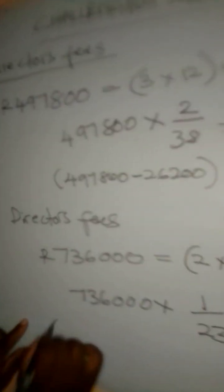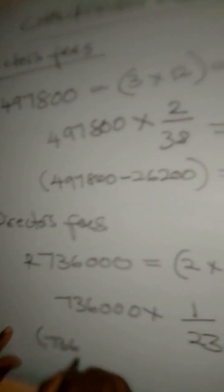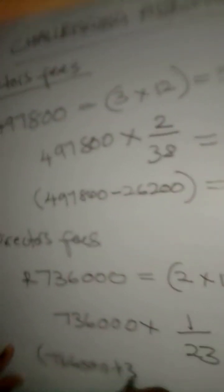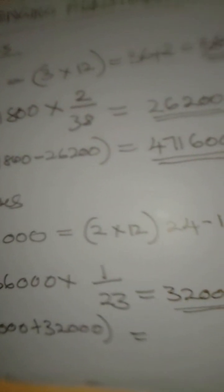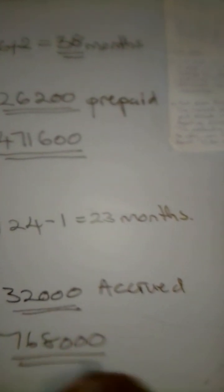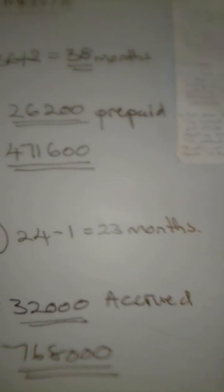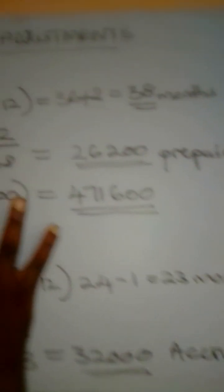What do we do with an accrued expense? We open our bracket here, $736,000 plus $32,000. It's equal to, it's going to give us something like $768,000. $768,000 is the money for the director's fees.